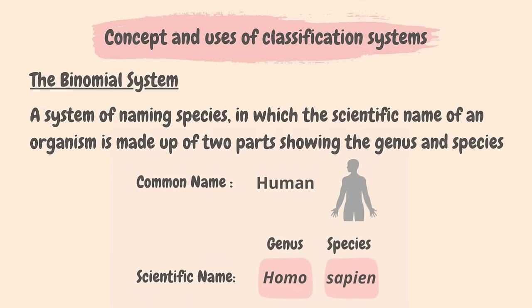In this system, the scientific name of an organism is made up of two parts, starting with the genus, which always starts with a capital letter, and followed by the species, starting with a lowercase letter. When typed, binomial names are always in italics, which indicates they are Latin. For example, Homo sapiens.